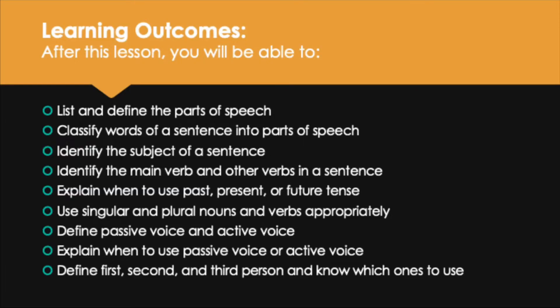So let's first take a look at the learning outcomes for this lesson. After you complete this lesson, you will be able to list and define the parts of speech, classify words of a sentence into parts of speech, and identify the subject and main verb of a sentence, as well as the other verbs. You'll be able to explain when to use past, present, or future tense, use singular and plural nouns and verbs appropriately, define passive and active voice and know when to use each, and define first, second, and third person point of view and know which to use in scientific writing.